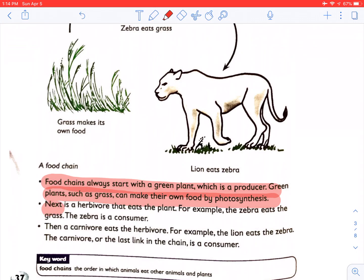Next is a herbivore that eats the plant. For example, the zebra eats the grass. The zebra is a consumer. Then a carnivore eats the herbivore. For example, the lion eats the zebra. The carnivore, or the large link in the chain, is a consumer.